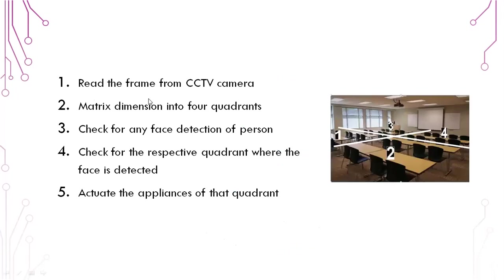The steps are: first, retrieve the frame from the CCTV camera; then divide the matrix dimension into four quadrants — as you can see in this picture where the room is partitioned into four quadrants. Then we check for face detection of a person. If a person is present in any quadrant, that part of the LED will glow; else it will not glow. Based on the quadrant where the face is detected, it activates the appliance.